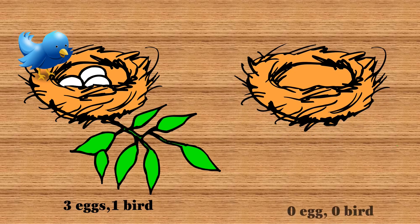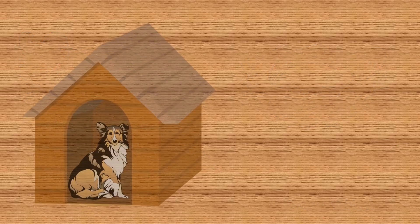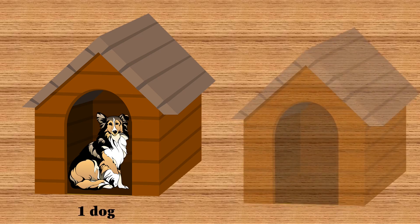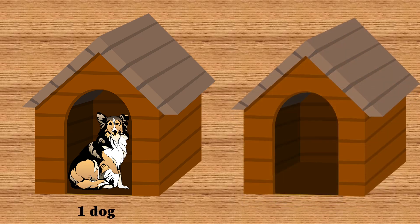This pond has five ducks and this pond has zero ducks in it. This nest has three eggs and one bird in it, and this nest has zero eggs and zero birds in it. This kennel has one dog and this kennel has zero dogs in it.